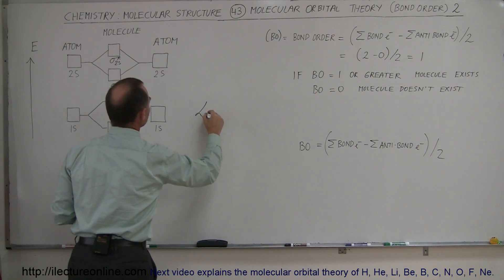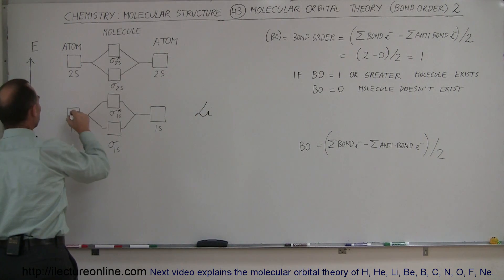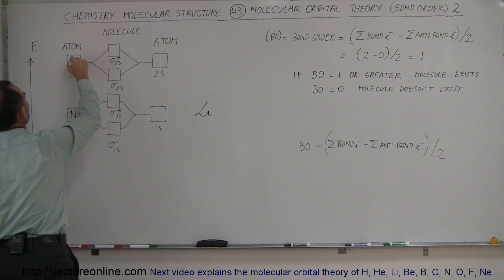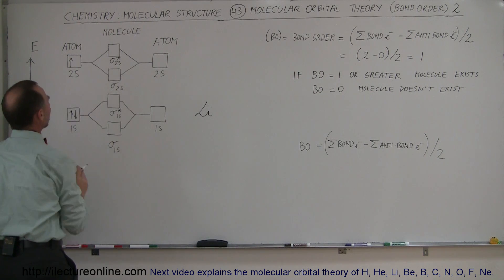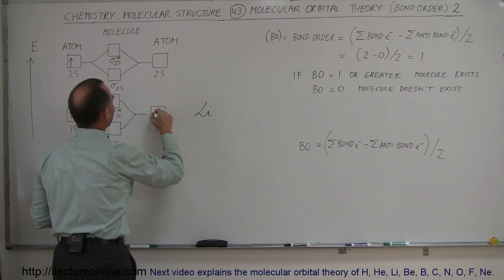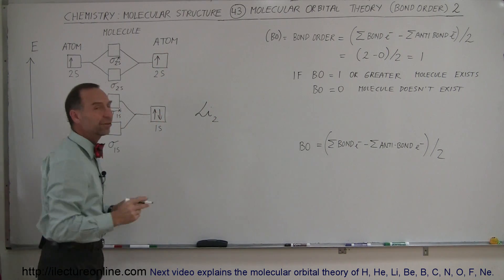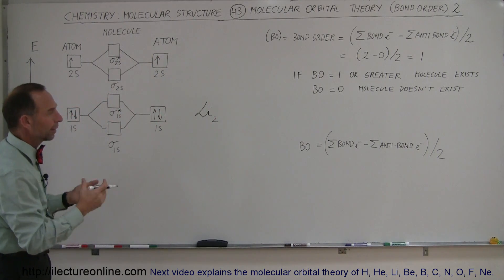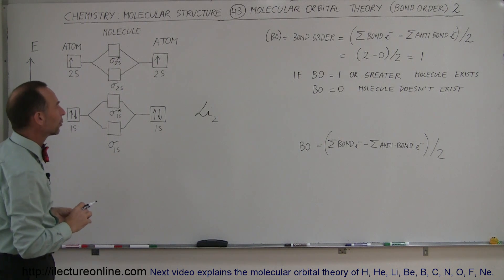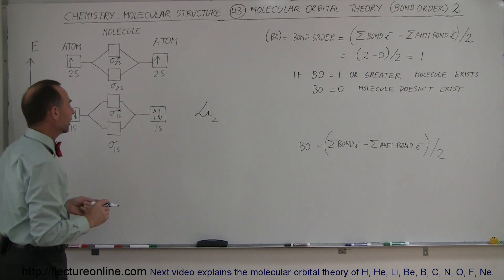If we use lithium, we know that there's two electrons in the 1s orbital and one electron in the 2s orbital. So that would be for the one atom, and then for the other atom, we have the two electrons in the 1s orbital and one electron in the 2s orbital. So we're going to see if lithium-2, or a diatomic lithium molecule, can indeed exist.